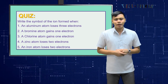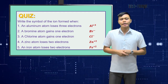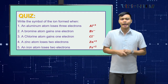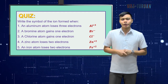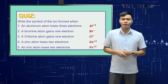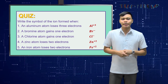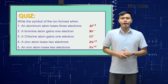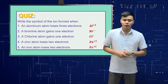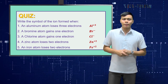Here are the answers. Number 1: Al³⁺. Number 2: Br⁻. Number 3: Cl⁻. Number 4: Zn²⁺. Number 5: Fe²⁺.